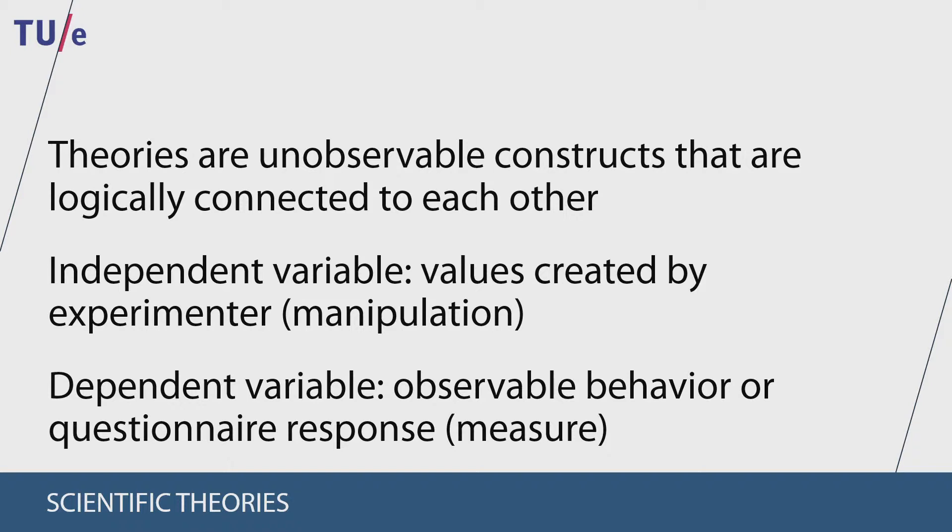A theory generally has a certain expectation about the relationship between an independent and a dependent variable. This expectation is what we call a hypothesis. Theories should always be tested against some observable behavior or other type of response. And we often do this by setting up a research with a specific design.